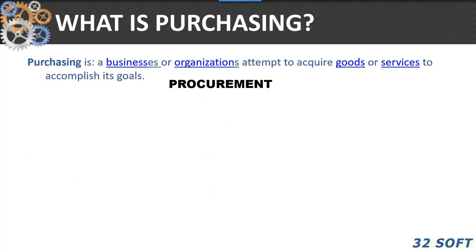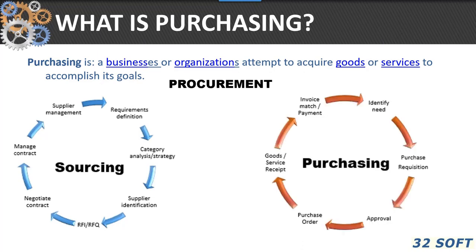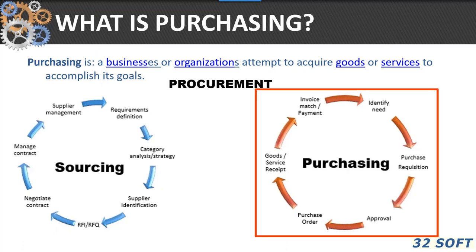What is purchasing? Purchasing is a business or organization's attempt to acquire goods and services to accomplish its goals. It involves sourcing, supply management, requirements definitions, categories, supplier identification, RFQs, contracts, etc. And then the actual procurement process of identifying need, requisitions, approval, and purchase orders. Today we're going to concentrate primarily on this side of the purchasing equation.